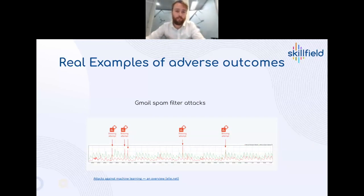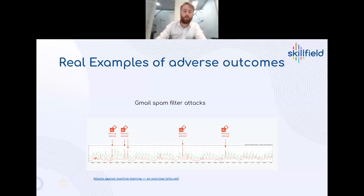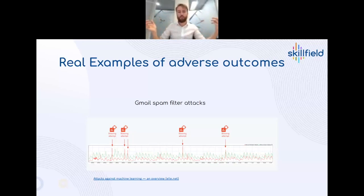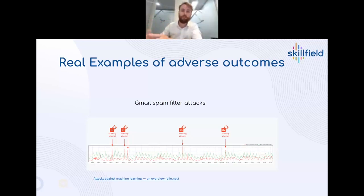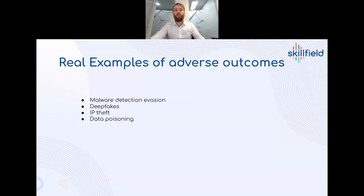Another example is spam filter attacks. An article by a Google security engineer shows spikes in users reporting spam messages as 'not spam.' What a group of people did was generate spam to their own accounts, then report it all as not spam, hoping the Gmail spam filter would learn their type of emails weren't spam. They could then send those emails to real targets without the filter picking them up — exploiting the fact that people have access to the real-world training data.